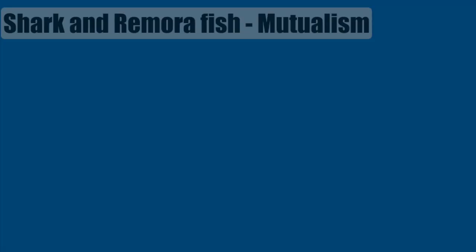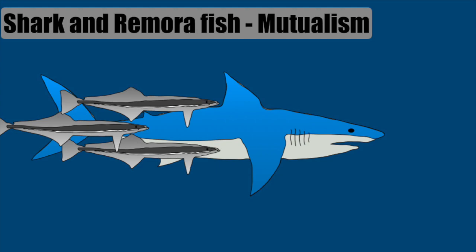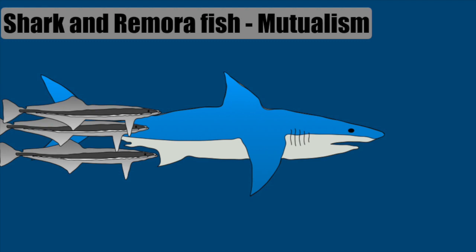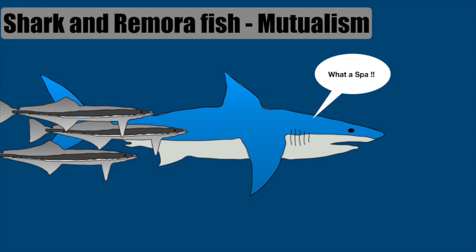We could see a similar friendship inside the oceans. This lemon shark has some remora fishes attached to it. A remora fish feeds on the ectoparasites on shark's skin and receives its food, while shark gets a spa treatment.